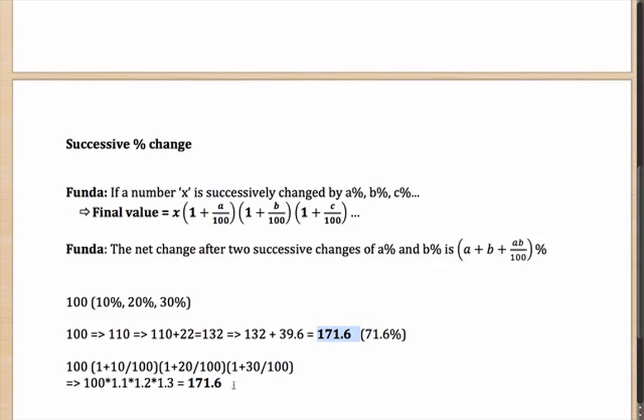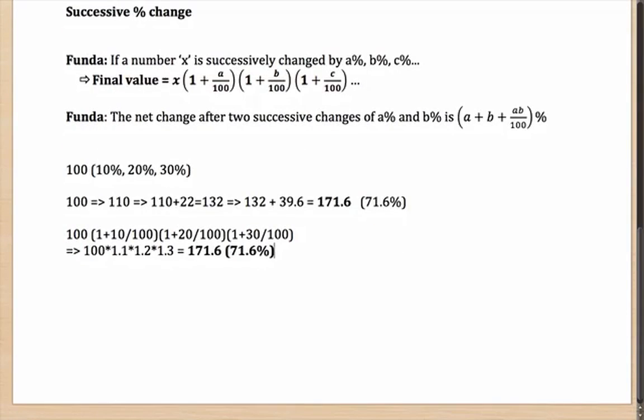From 100, you are getting to 171.6. That means your change was 71.6%. This idea of getting the final value by formula comes in most handy to you when you have two values.